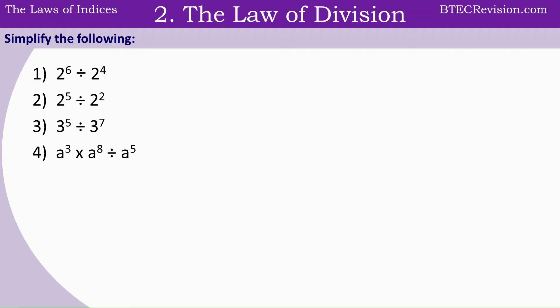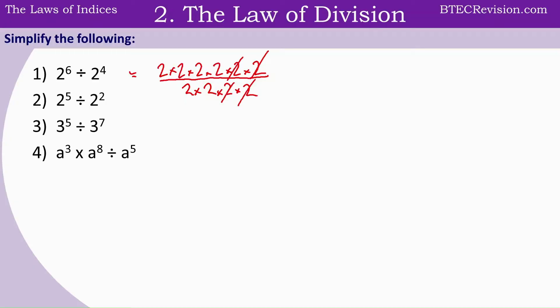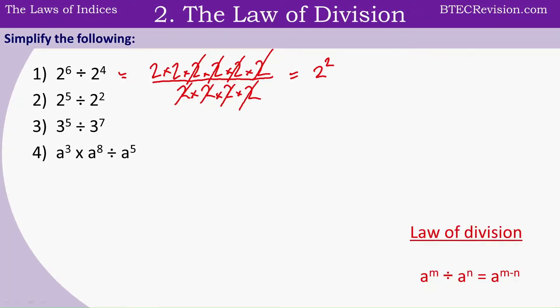Now let's look at the next law. We have 2 to the power of 6, written as 2 times 2 times 2 times 2 times 2 times 2 times 2. Now we divide by 2 to the power of 4, so there are four 2's in the denominator. The numerators cancel with the denominators, and we are left with 2 times 2, which is equal to 2 to the power of 2. This gives us the law of division: a to the power of m divided by a to the power of n is equal to a to the power of m minus n.